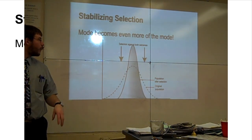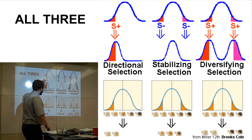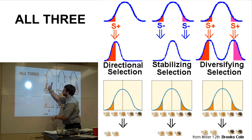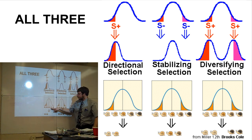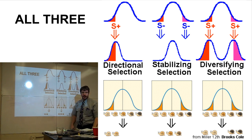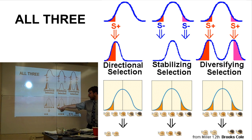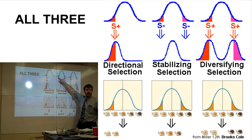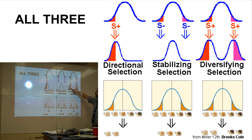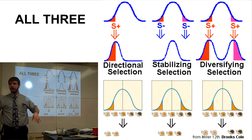Here are all three types again. Directional selection: the whole graph shifts in one direction — like snails where the selected color became dominant and the others are rarely seen anymore. Stabilizing selection: the two extremes are removed — like snails where the more green or more brown are gone and only the medium ones remain. Diversifying selection, also called disruptive selection: whatever was in the middle was at a disadvantage, so the two extremes increase — like snails of varying degrees where the ones on the ends are the ones that matter more. Those are the three types of selection.